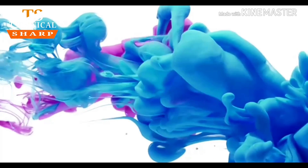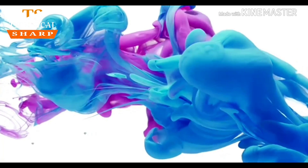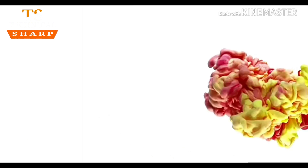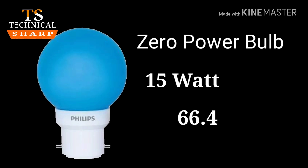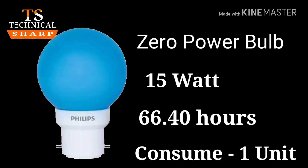Which electrical instrument takes how much time to consume 1 unit of electricity? If we use a LED bulb of 15 watt, in 66.40 hours it will consume 1 unit of electricity.